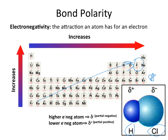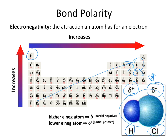When looking at bond polarity, we have to look at which element is most electronegative. If we look at HCl, we have hydrogen and chlorine involved in this covalent bonding. From the table, hydrogen has an electronegativity value of 2.1 and chlorine has an electronegativity value of 3.0. So chlorine is the more electronegative of the two elements. When we look at the distribution of electrons inside that compound, the atom with the higher electronegativity is going to have a partially negative charge on its surface area.